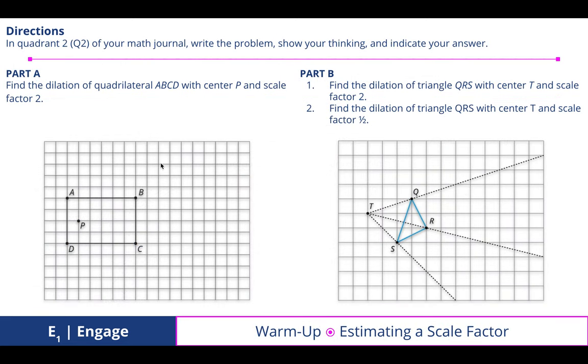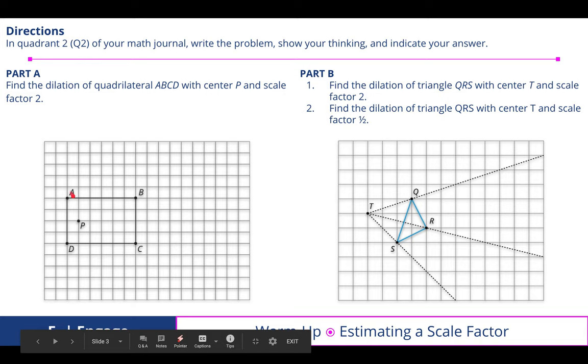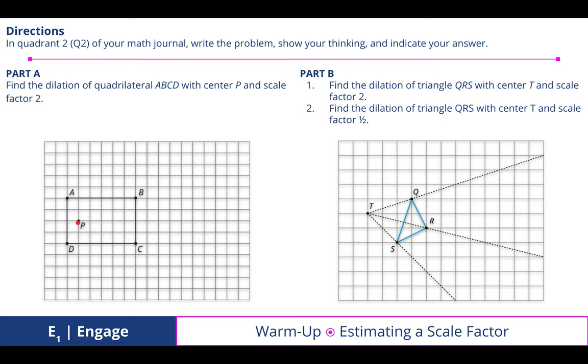In quadrant 2 of your math journal, write the problem, show your thinking, and indicate your answer. For part A, find the dilation of quadrilateral ABCD with center P and scale factor 2. I went through this process with you by drawing rays from each of those vertices from the center of dilation.